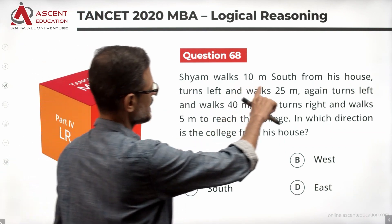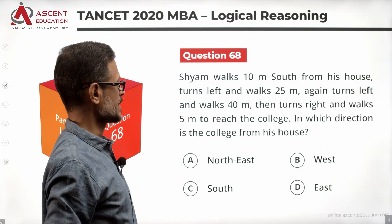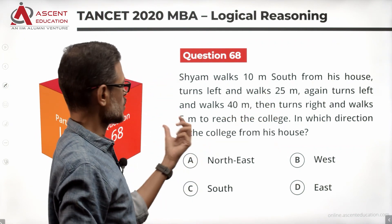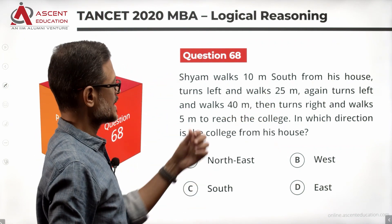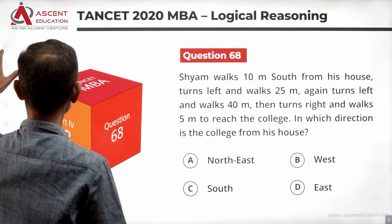Sham walks 10 meters south from his house, then turns left and walks 25 meters, again turns left and walks 40 meters, and then turns right and walks 5 meters to reach the college. In which direction is the college from his house is what the question is. There are answer options. Let's get started.